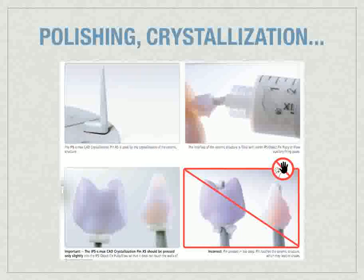This is a key area where common sense might tell you to do something that shouldn't be done. You're going to use the special tray and pin system when you go to fire this Emax. If you're using the firing pin, you're going to take Object Fix — the putty or the fix are both fine — and seat your restoration on the pin.